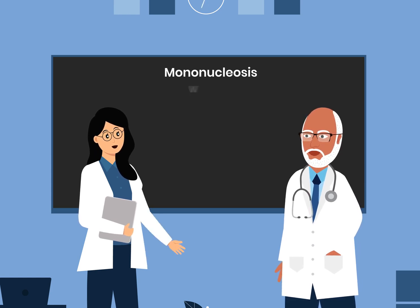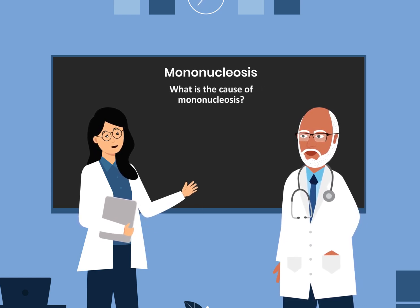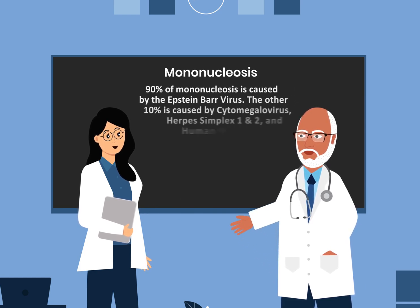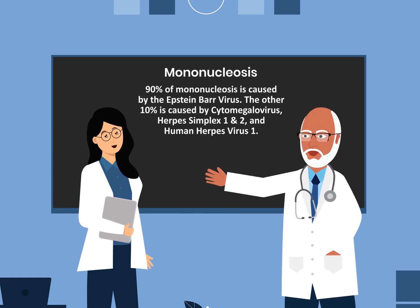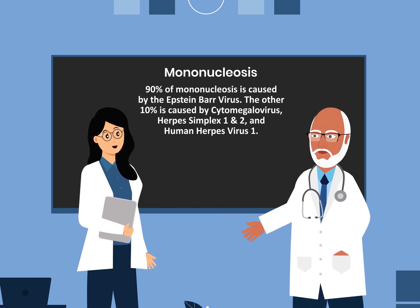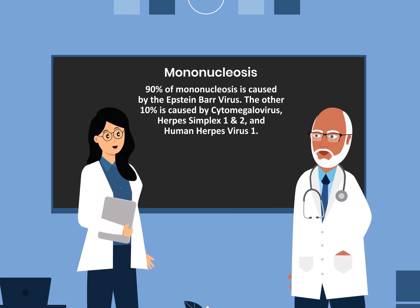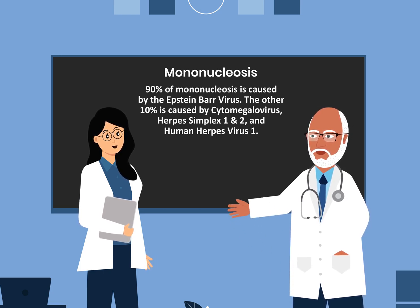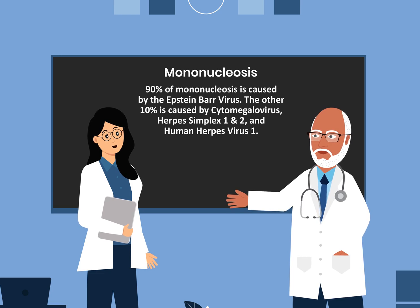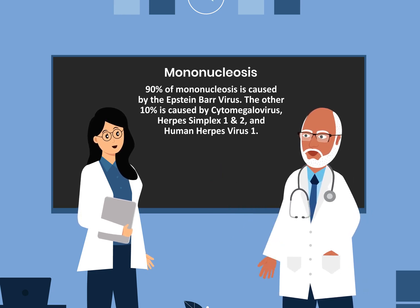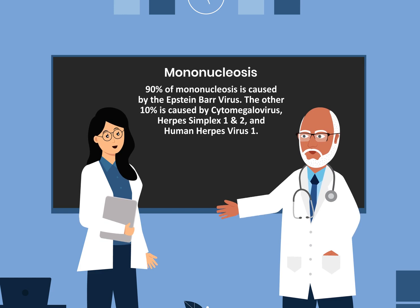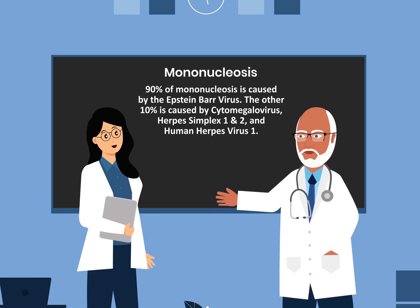90% of mononucleosis is caused by the Epstein-Barr virus. The other 10% is caused by cytomegalovirus, herpes simplex 1 and 2, and human herpes virus 1.